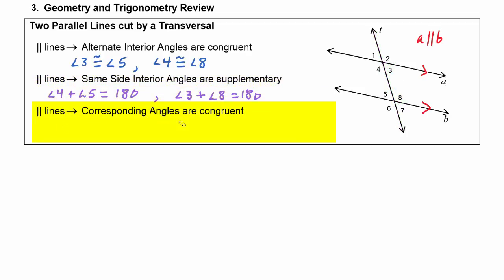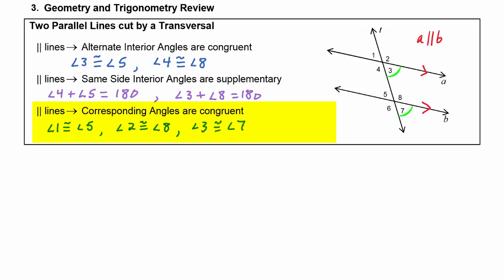When you have parallel lines, the corresponding angles are congruent to each other. Corresponding means in the same relative position. So angle one is congruent to angle five because they're both in the upper left position. Angle two is congruent to angle eight because they are both the upper right angle. Angle three is congruent to angle seven because they are both the lower right angles. And angle four is congruent to angle six because they're both the lower left angles.